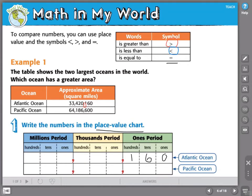In my ones period, I've got 160. My thousands period has 420. And my millions period has 33. Now, I can read this number, 33,420,160 is the area of the Atlantic Ocean.